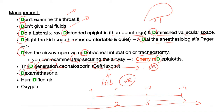What else? Dexamethasone — it's a steroid. Why? Because steroids are the most famous, most significant anti-inflammatory drugs known to mankind, as they inhibit both the cyclooxygenase pathway and the lipoxygenase pathway. You can also give humidified air and of course oxygen. It's an upper airway emergency.